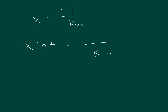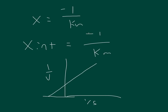To graph that out: we have 1 over the velocity on the Y-axis and 1 over the substrate concentration on the X-axis, giving a straight line. At the Y-intercept, we have 1 over Vmax, and at the X-intercept, we have negative 1 over Km.